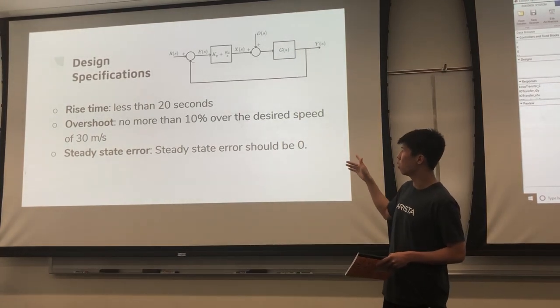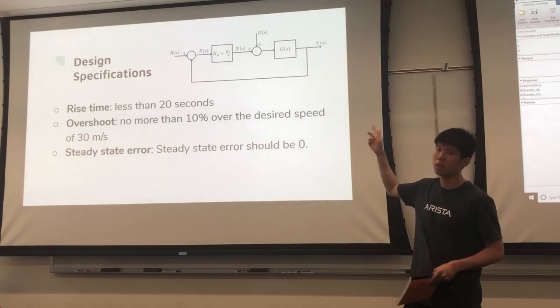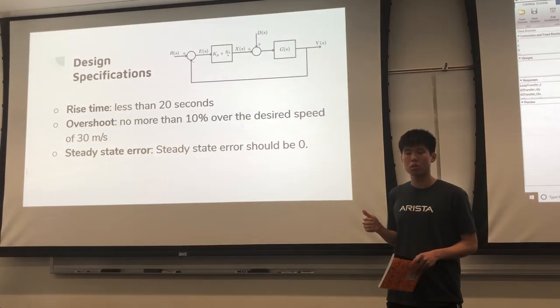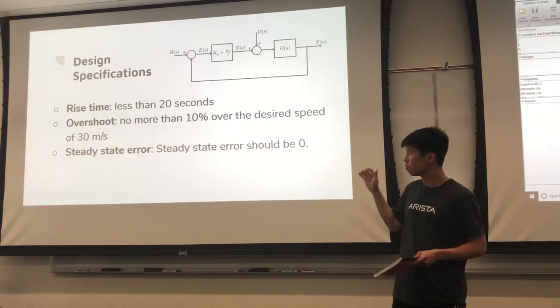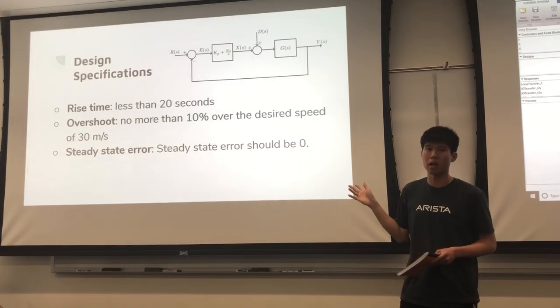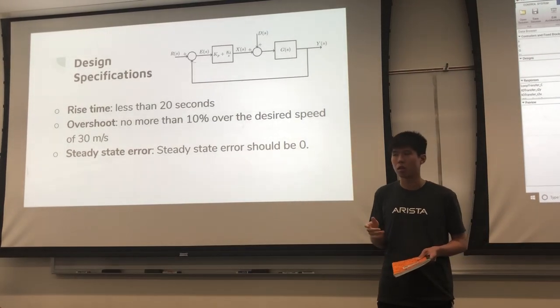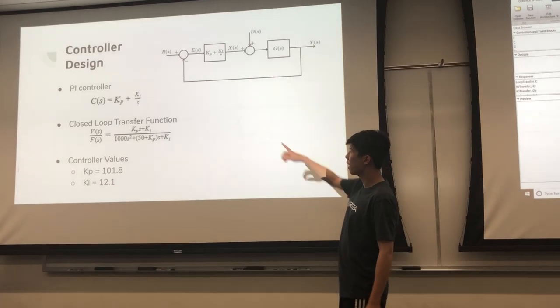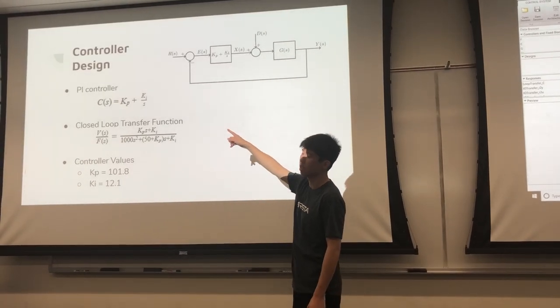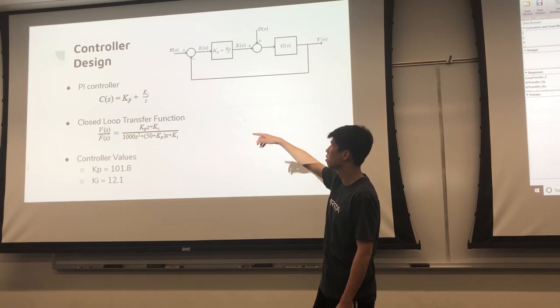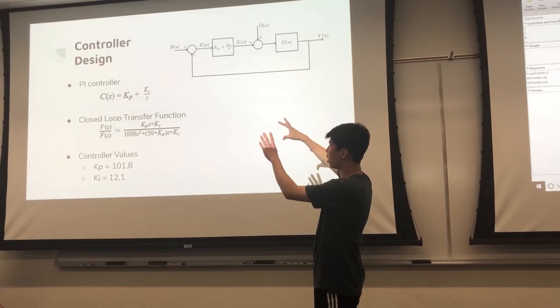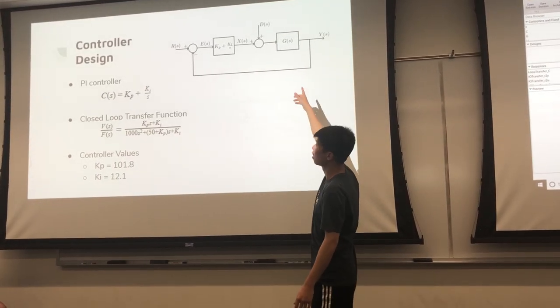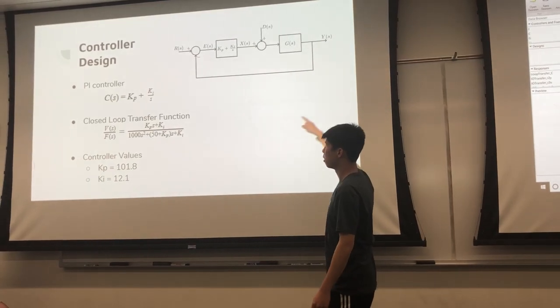To achieve these goals, we choose to use a PI controller because a PI controller is good for keeping low steady-state error and good for disturbance rejection. For a PI controller, our transfer function is kp plus ki over s. We apply that function in front of the G of s equation in the block diagram.